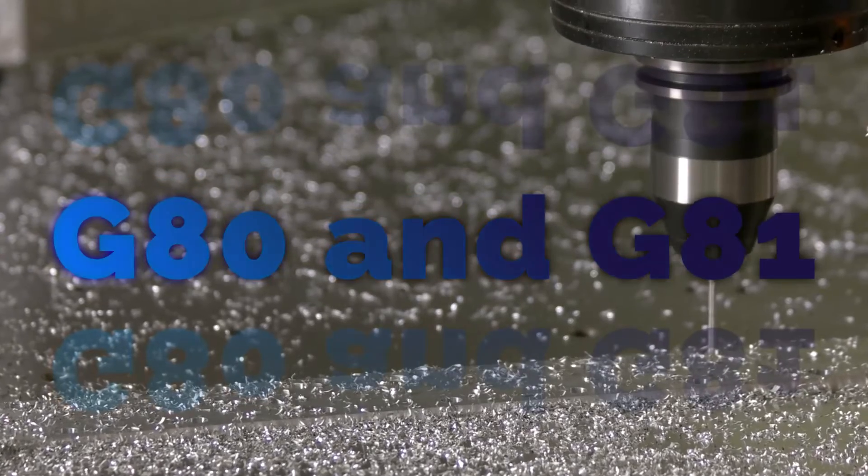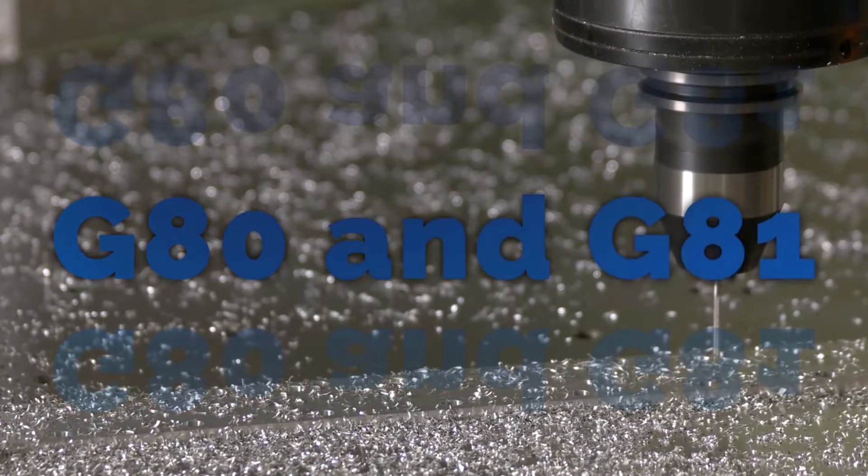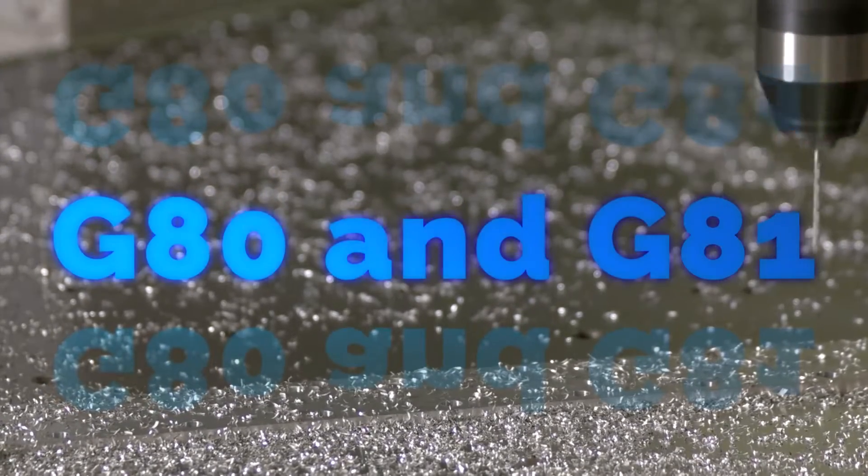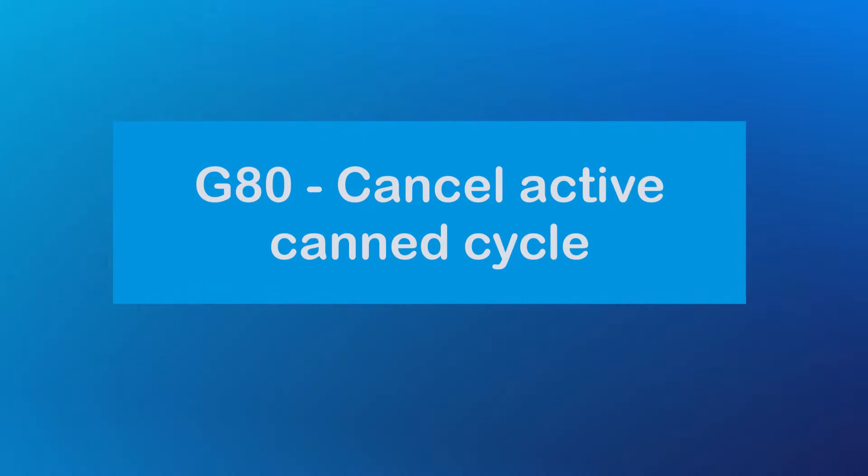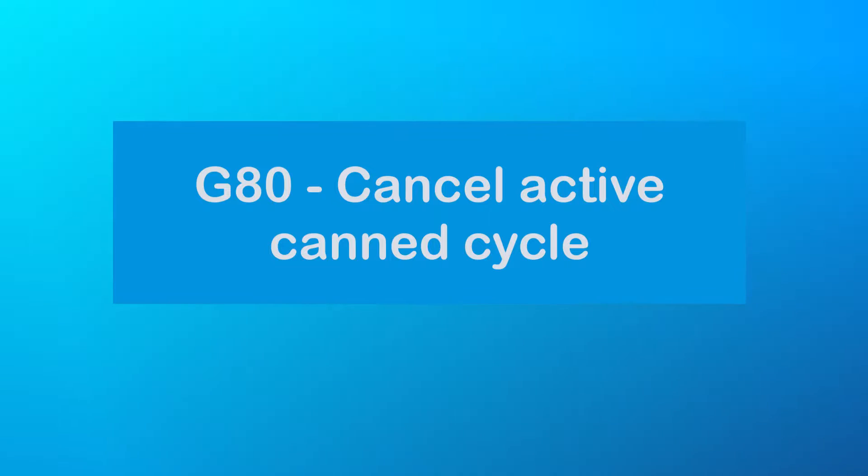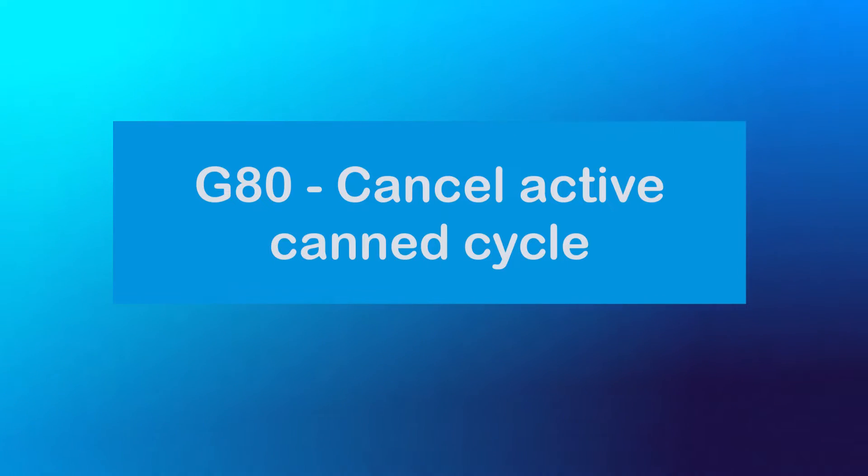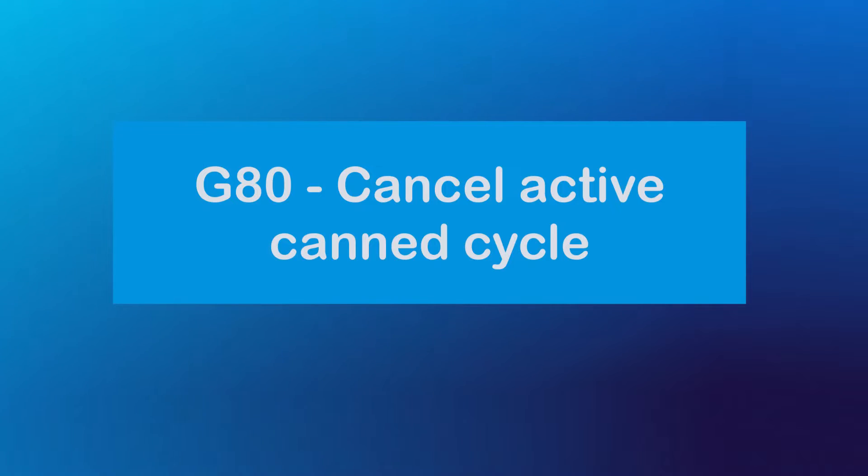Now let's talk about G80 and G81, two G-codes associated with canned cycles. G80 is the G-code used to cancel a canned cycle. This command ensures that the machine stops following the canned cycle pattern and returns to regular programming.